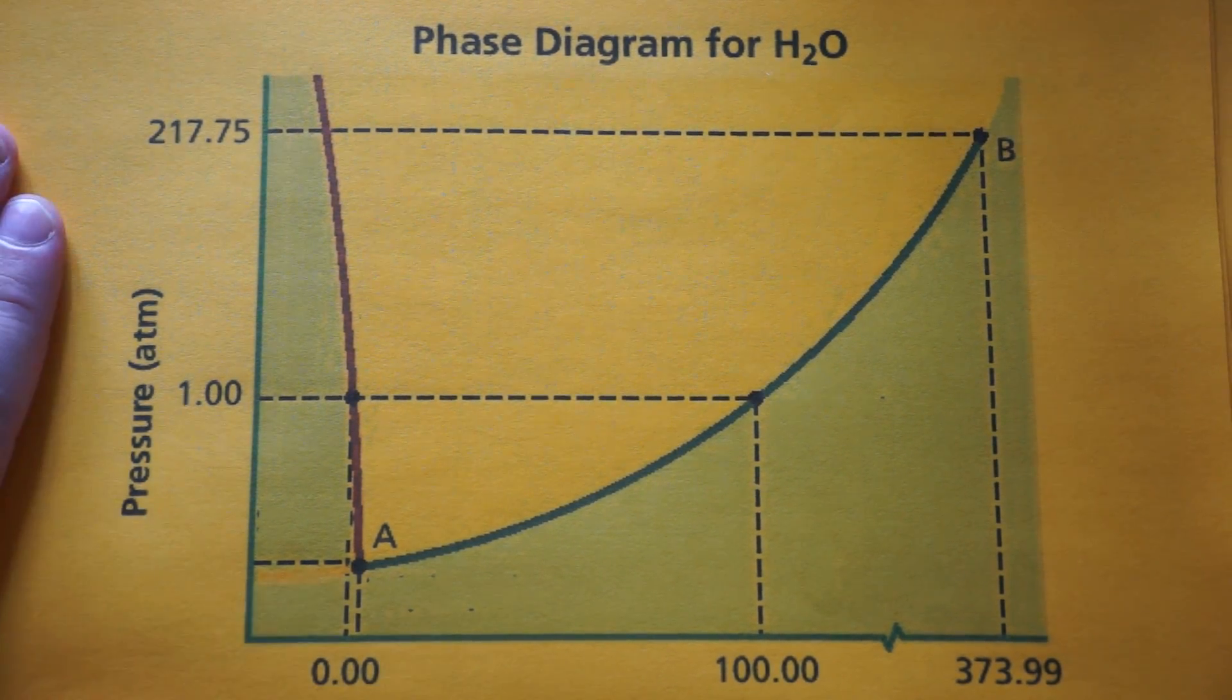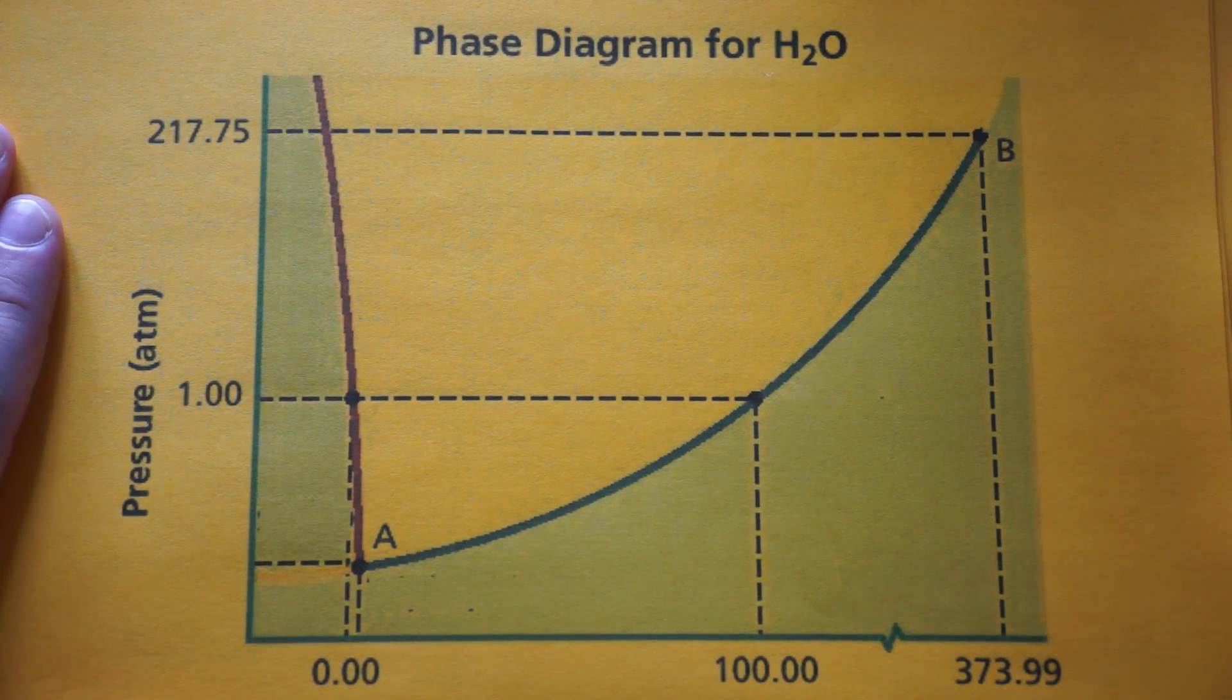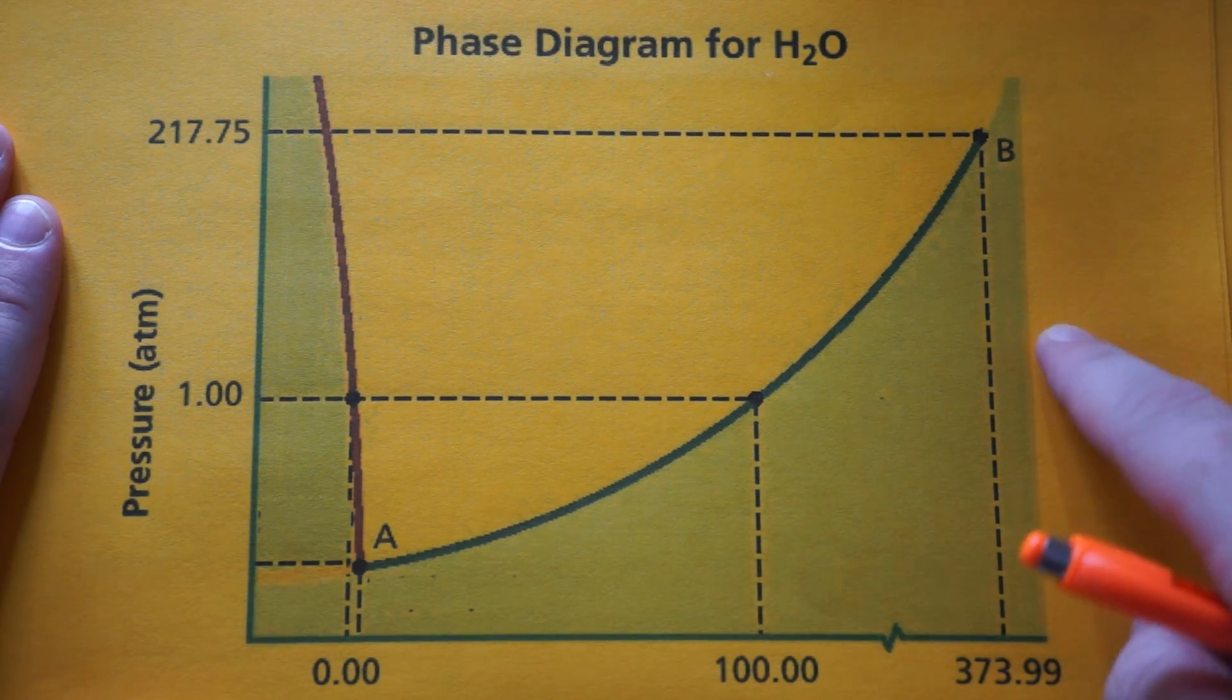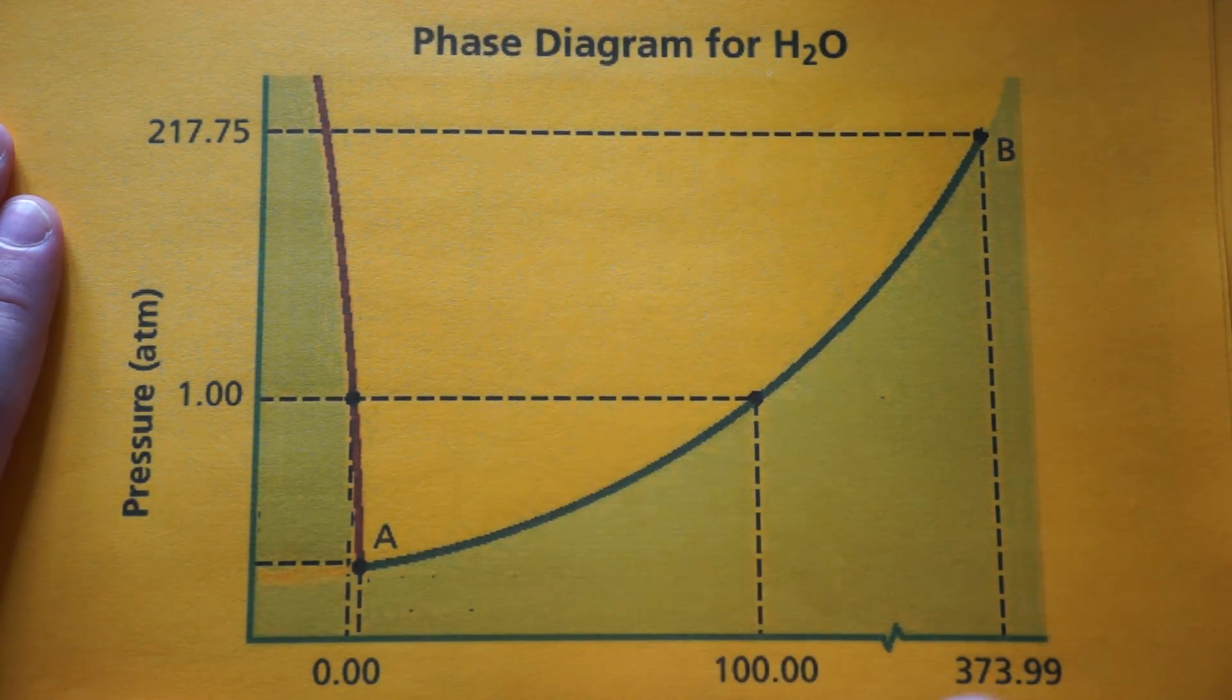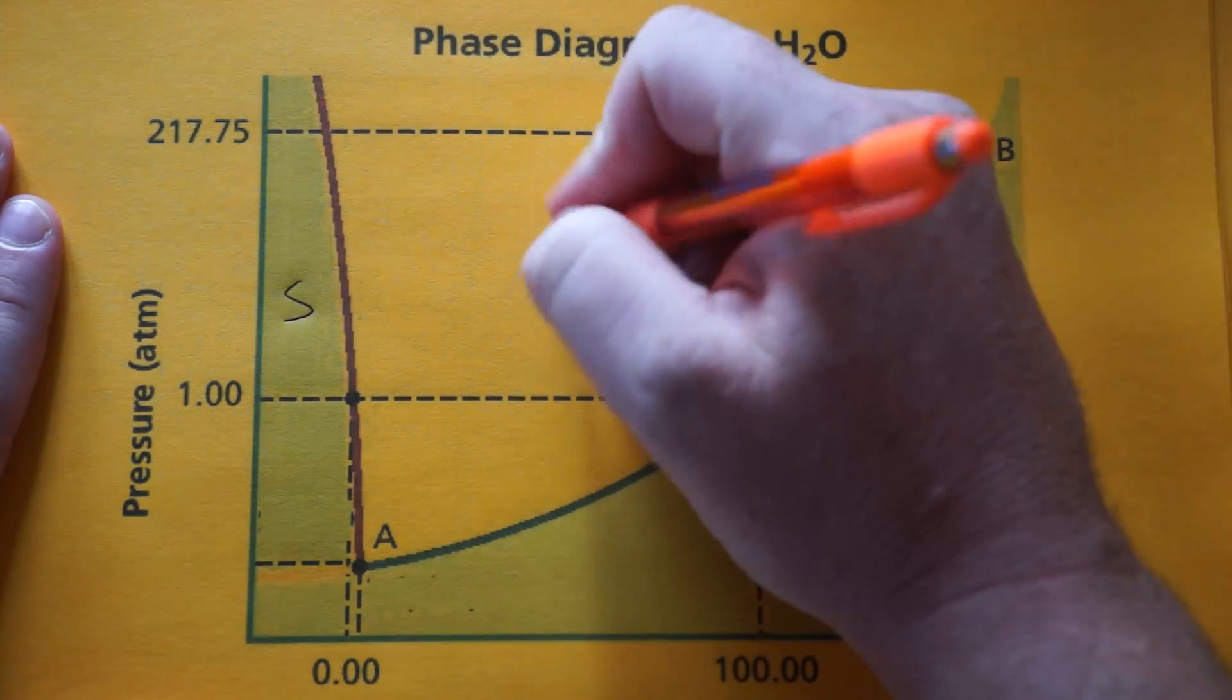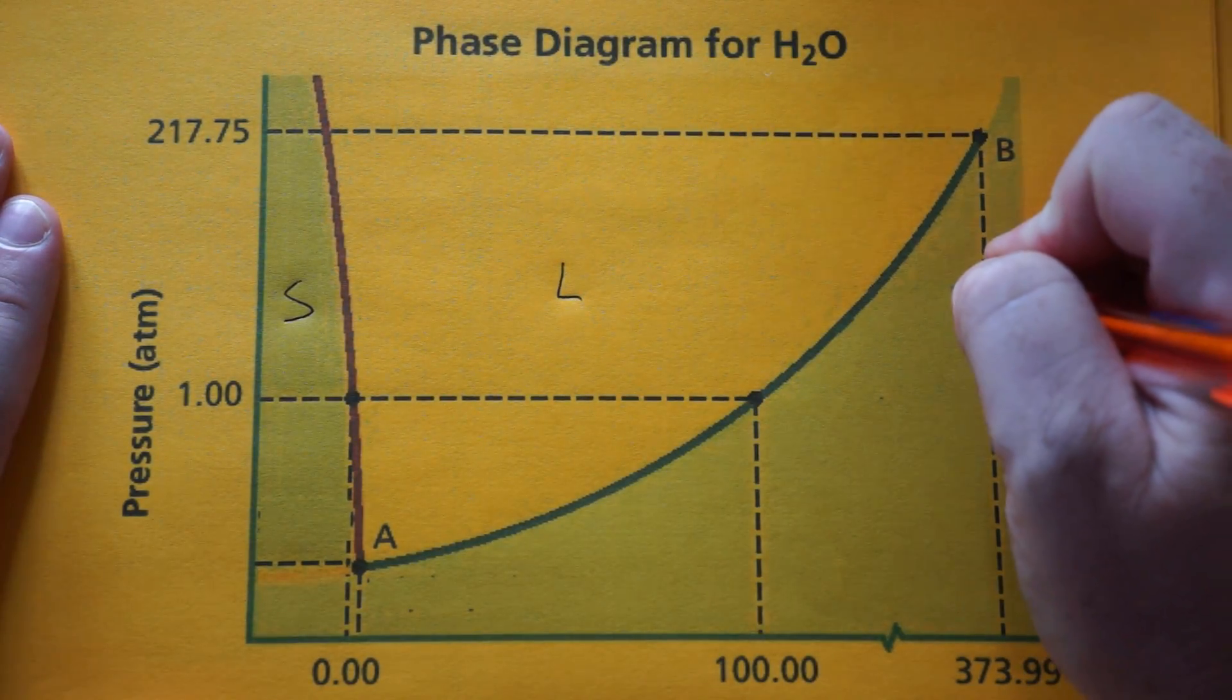To start analyzing these phase diagrams, you pick a pressure where all three phases exist. Remember, the temperature is down here, so the lowest temperature is your solid, in the middle is liquid, and the highest temperature is gas.